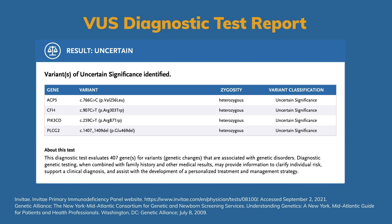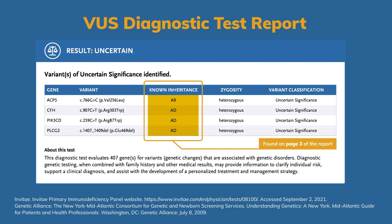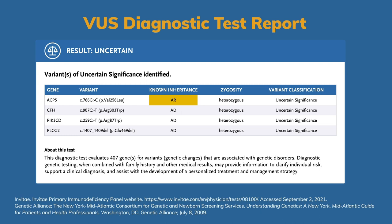All of them are heterozygous, as you can see under the zygosity, meaning the patient only had one copy of the variant. If the patient had two copies, these would be homozygous. The importance of zygosity is determined by the inheritance pattern of each condition associated with the gene. This information can be found on page 3 of the report. For example, if a condition is autosomal recessive, a heterozygous variant is likely not disease-causing, since two pathogenic variants are needed. But if a condition is autosomal dominant, only one pathogenic copy is necessary, so heterozygous variants are worth looking into. You can see in this report the inheritance that we highlighted — an easy way to decipher which genes you're going to be interested in.